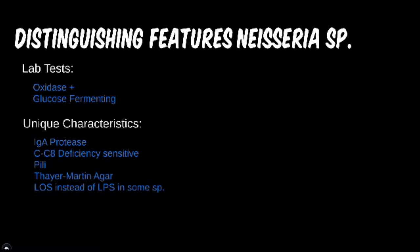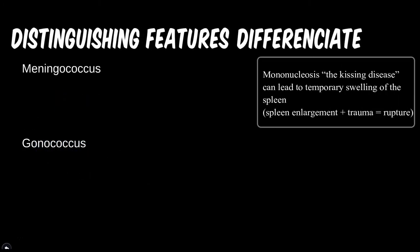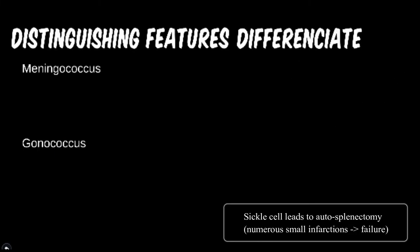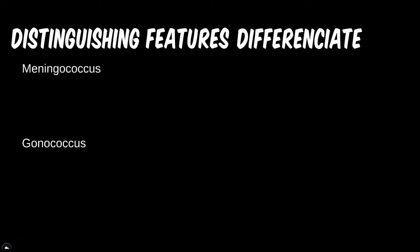Encapsulated bacteria can be particularly concerning for certain individuals with predispositions. A patient that has had their spleen removed, ruptured due to an automotive accident or mononucleosis, or has chronic sickle cell disease is at higher risk for developing meningococcus infections. Though both species ferment glucose, only N. meningitidis also ferments maltose — this can be used to differentiate between them.